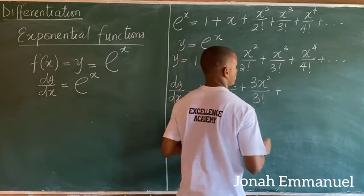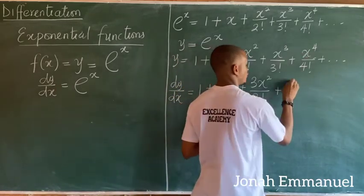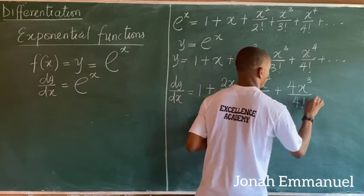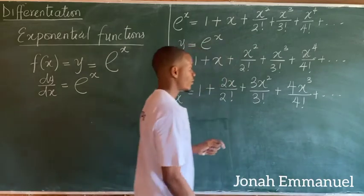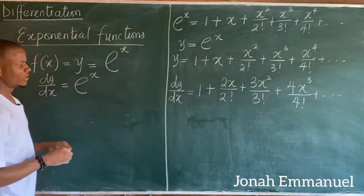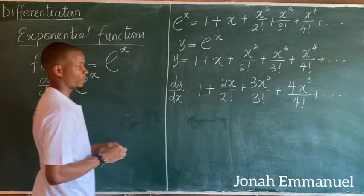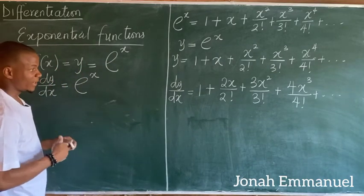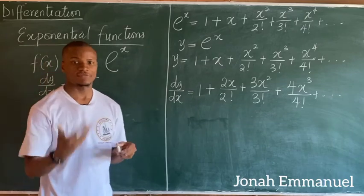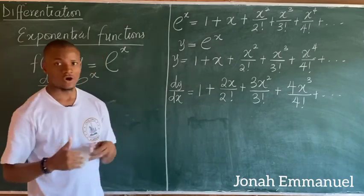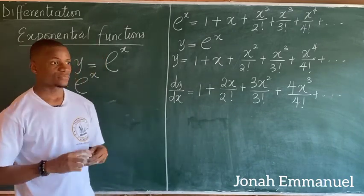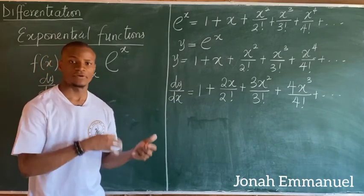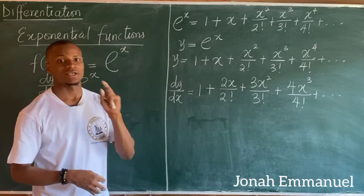Differentiating x⁴ gives 4x³ over 4 factorial, and it continues. Before we proceed, let's talk about factorials. A factorial is simply the multiplication of consecutive terms in descending order such that each number differs from the previous by 1, until 1.